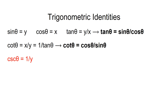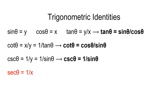Cosecant of theta equals 1 over y, which is also equal to 1 over sine theta, because y is equal to sine theta on the unit circle. So we have the identity: cosecant of theta is equal to 1 over sine theta. Similarly, secant of theta is defined to be 1 over x. We can substitute cosine theta for x, and this gives us the identity: secant theta is equal to 1 over cosine theta, because they are reciprocal functions.